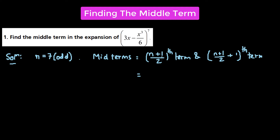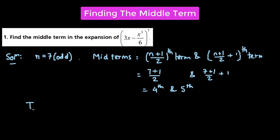So we have 7+1 over 2, and 7+1 over 2 plus 1. That gives us 8 over 2, which is 4. So the fourth term and the fifth term will be the middle terms. We need to find out the values of T4 and T5.